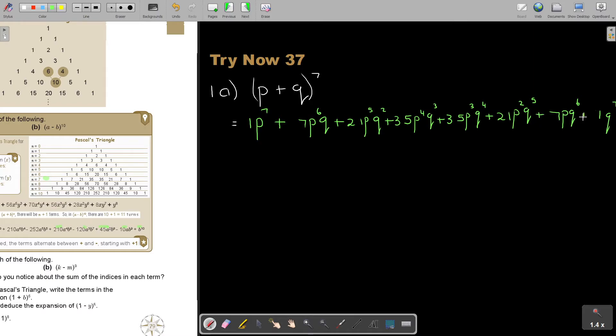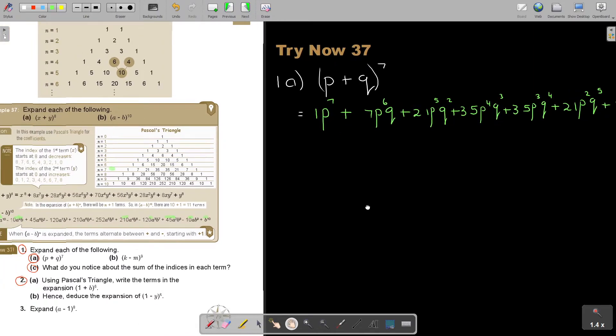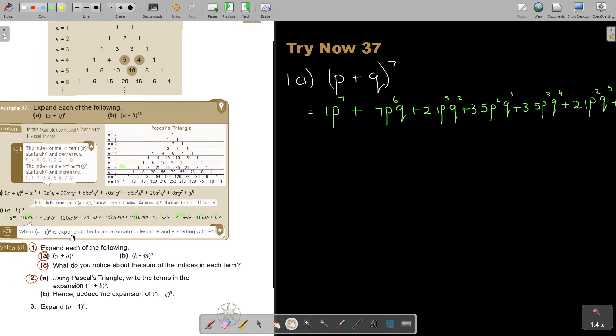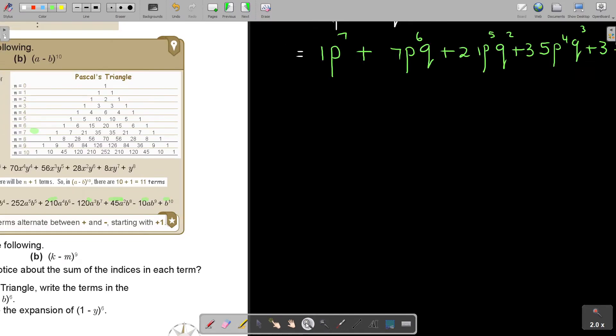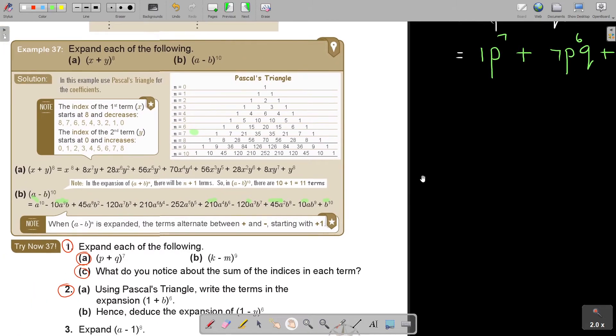And then, all of them is going to be plus. I want to just go back to that example. I want to show you something. What do they say here? When it's a negative, the terms alternate between positive and negative, starting with positive. So if it was negative, this is positive 1, so positive 1 means it's the front one. And then negative, positive, negative. So there, it starts with the positive in front and then goes the negative. But if it's positive, all of them will be positive. Note in the expansion there will be N plus 1 terms.